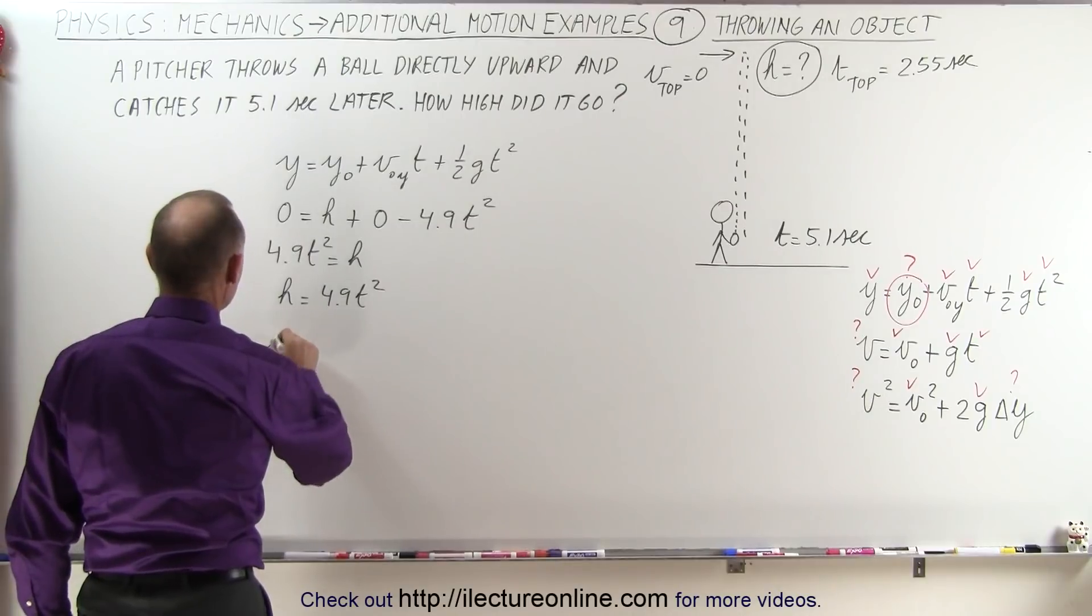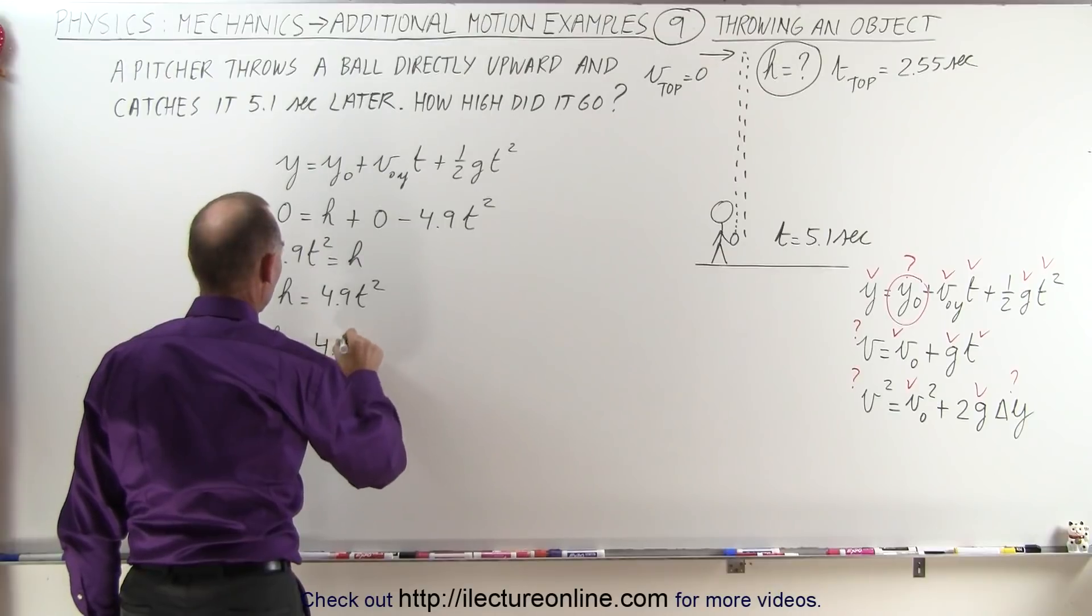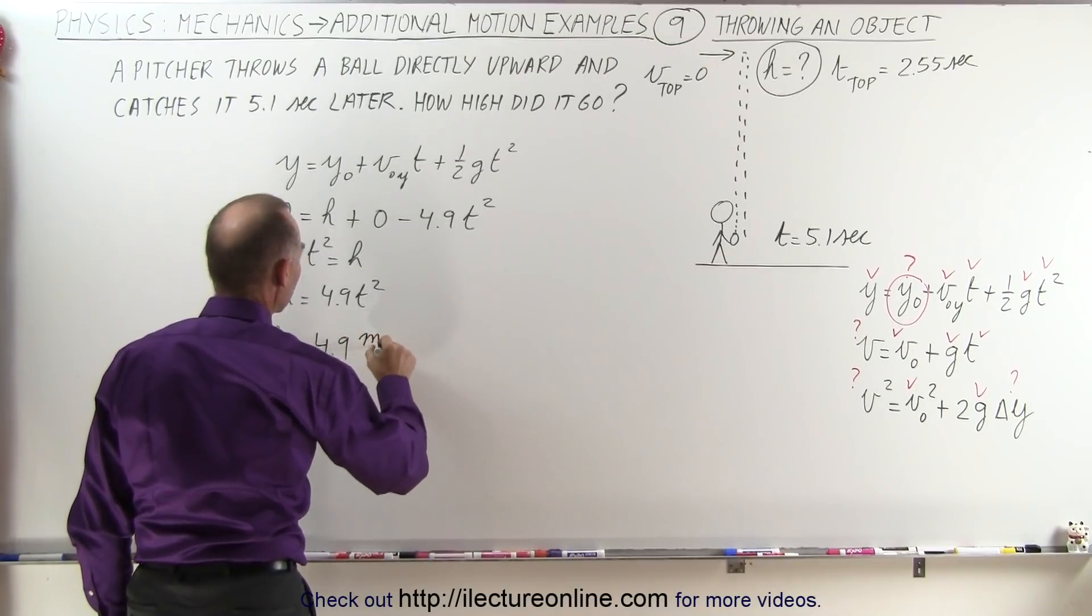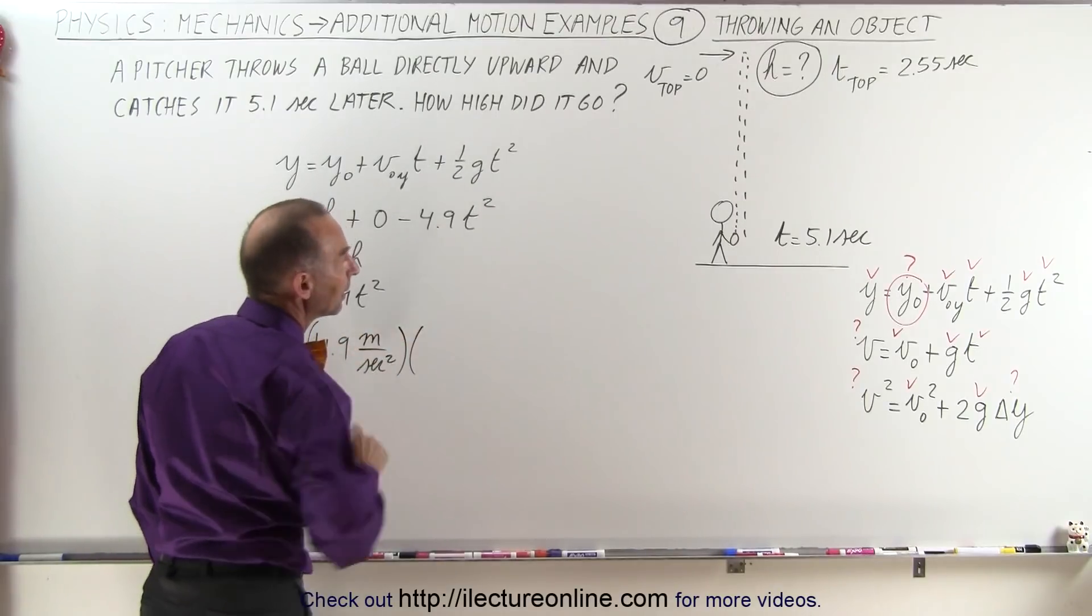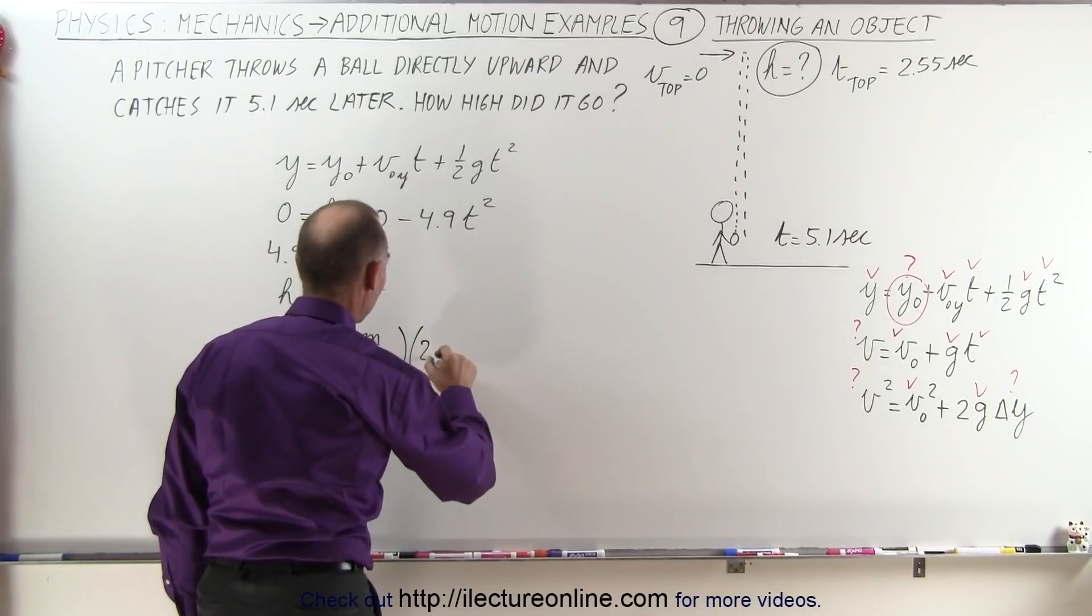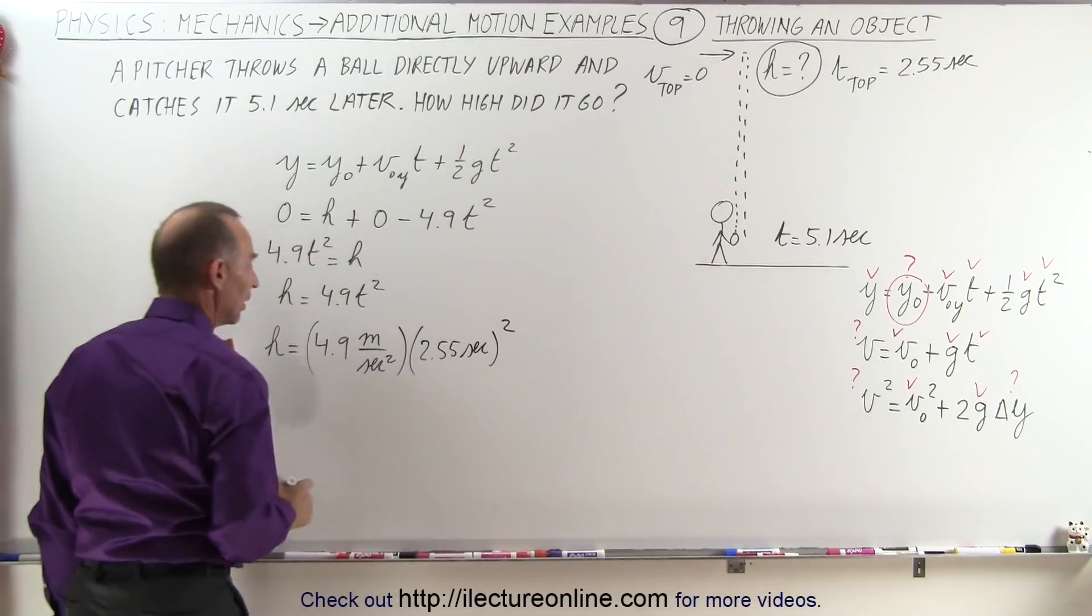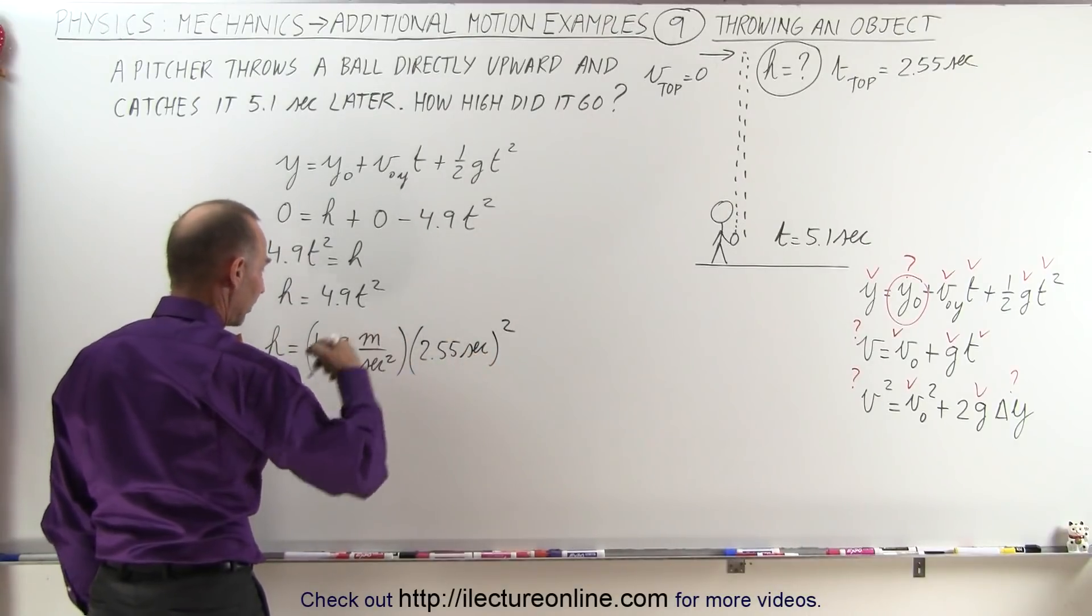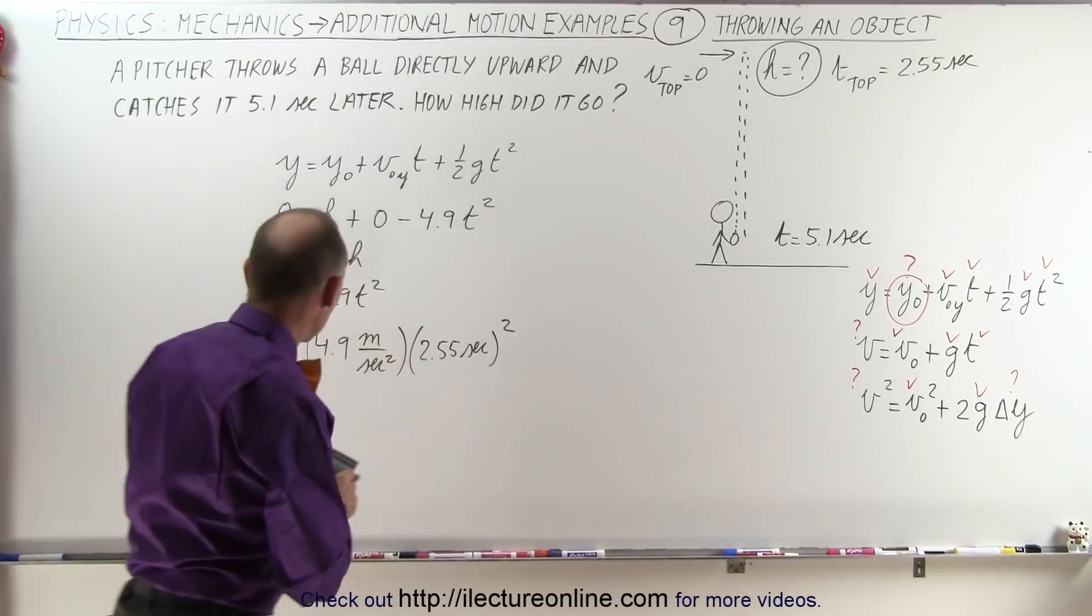So then we get h is equal to, now 4.9 that would be in meters per second squared, that's half the acceleration due to gravity, meters per second squared, times the time, the time would be 2.55 seconds, and that would be squared, and then you can see that the second squared cancels at the second squared, and h would be in meters, and let's see what that is equal to.